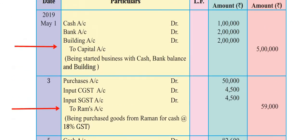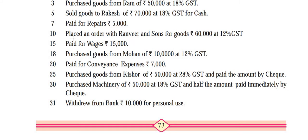The fifth entry dated 10th: placed an order with Ranveer & Sons for goods Rs. 60,000 at 12% GST. Here, only an order has been placed - this is an event and not a transaction. Hence no journal entry will be passed. You have only placed an order with these people but have not completed the actual transaction. This is why no journal entry is allowed for this date.